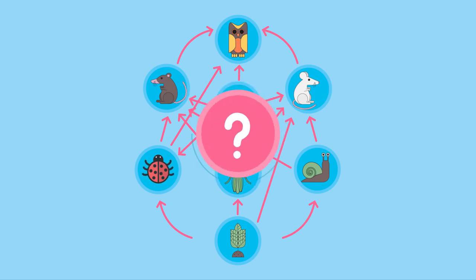What happens if we remove one species from the food chain, perhaps if it went extinct? To figure it out, we have to look at the whole food web.